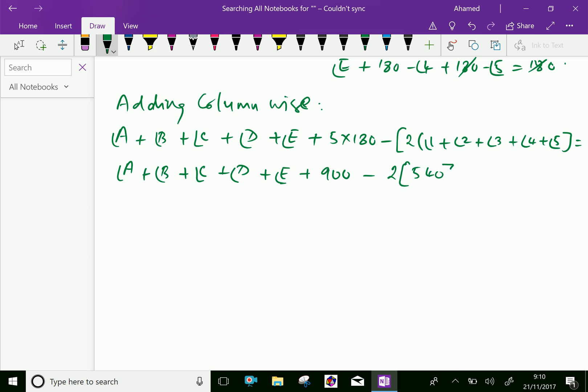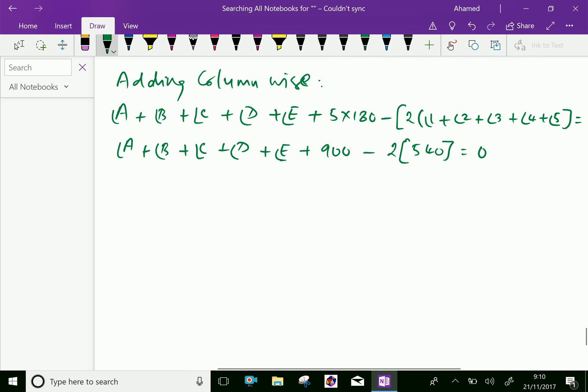Now, A plus B plus C plus D plus E equal minus 900 plus, because 2 into 540 is 1080, that is plus 1080.